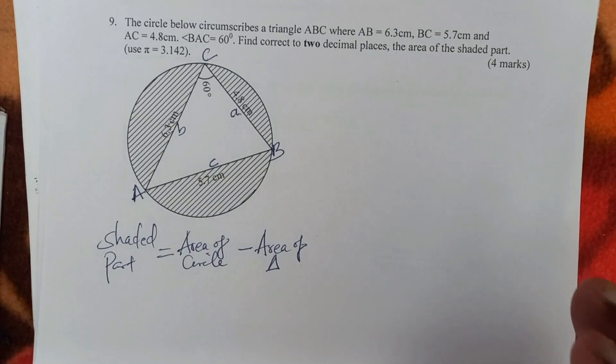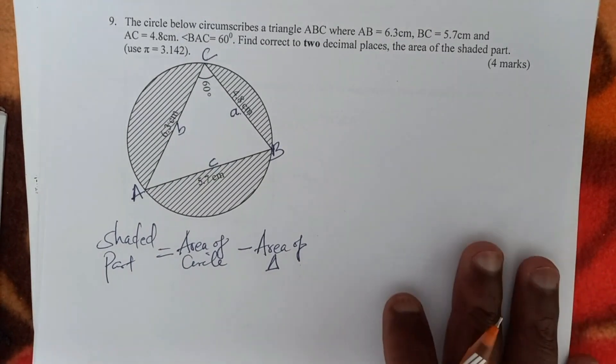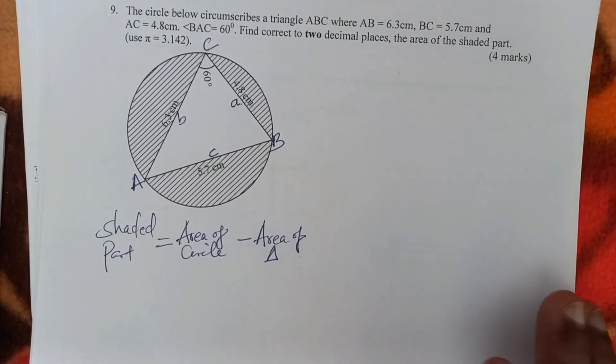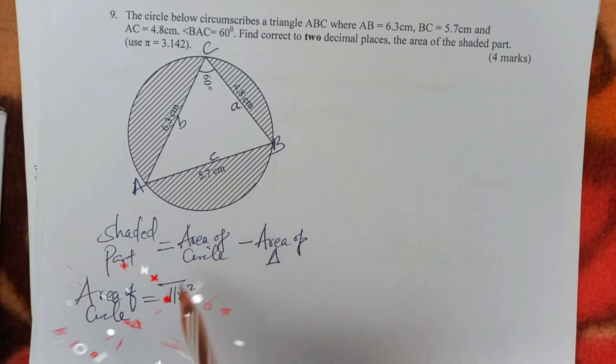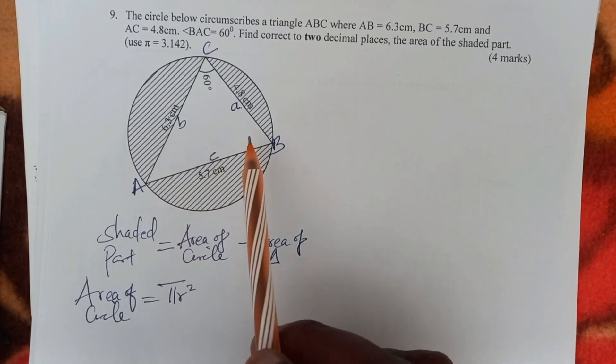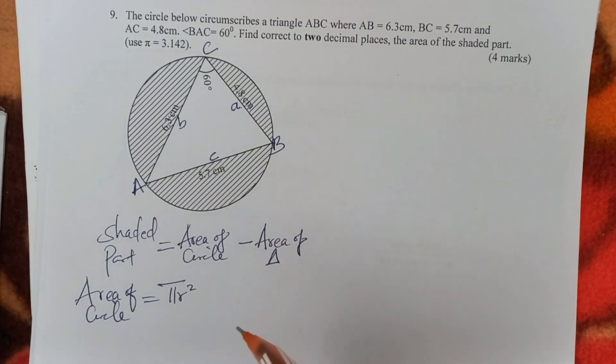Let's begin with getting the area of the circle. How do we get the area of the circle? Area of the circle is given by pi r squared. We have pi, we don't have the radius. So how do we get the radius? We are going to use a certain concept, the sine rule, to get the radius.